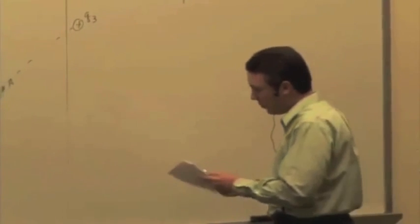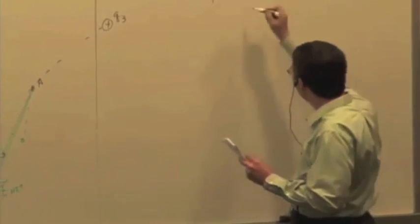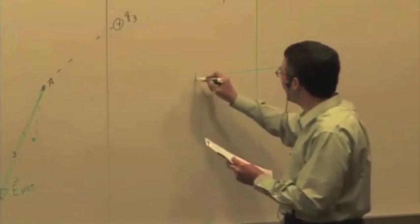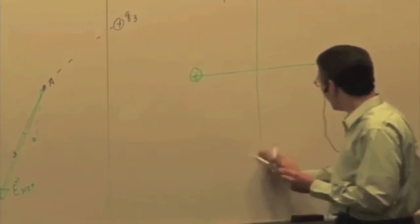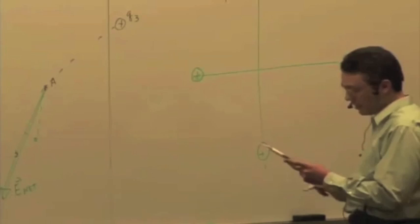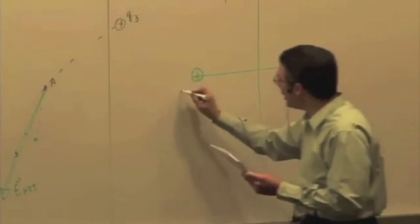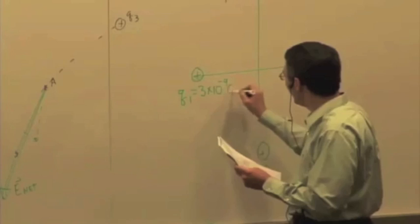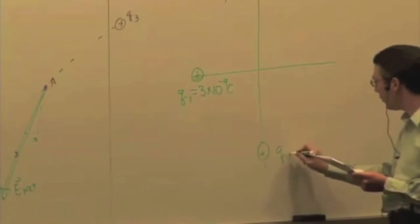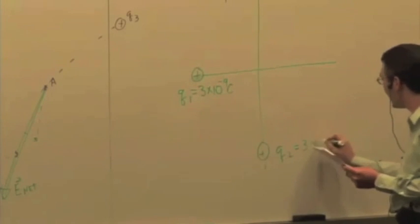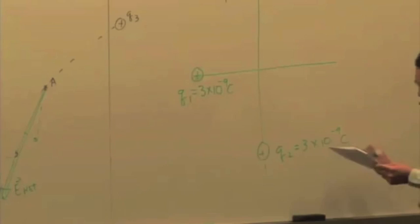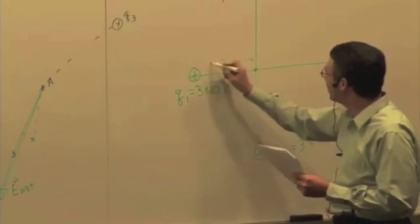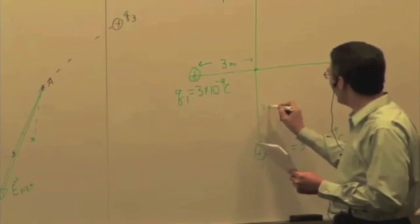We could have, for example, two positive charges. Let's place a positive charge here and a positive charge here. And let's say Q1 is equal to 3 times 10 to the minus 9 Coulombs. Let's say Q2 is the same thing, so we'll make them identical, just for simplicity. And also say they're the same distance away from the origin. Let's say this is 3 meters, and this is 3 meters.